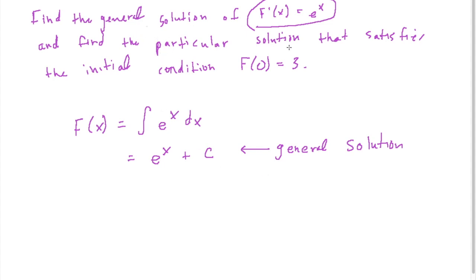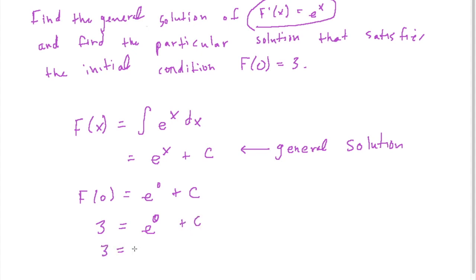The particular solution would satisfy the condition F(0) equals 3. Using this initial condition, we can solve for C. We set up: F(0) equals e to the 0 plus C, and F(0) equals 3. Since e to the 0 power equals 1, we subtract that to get C equals 2. We plug that back into our general solution to get F(x) equals e to the x plus 2 — our particular solution.